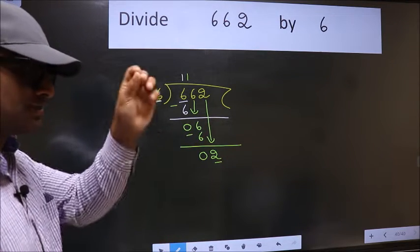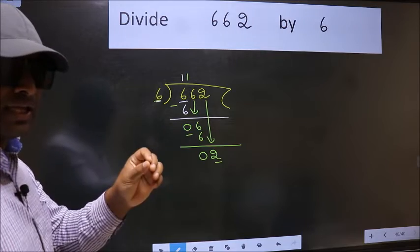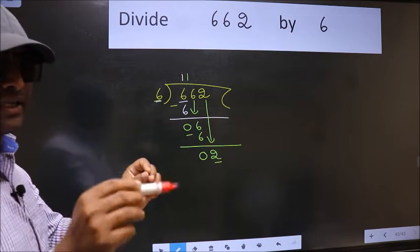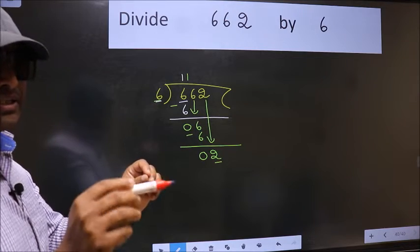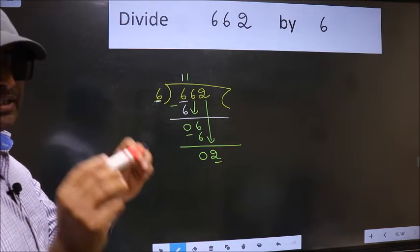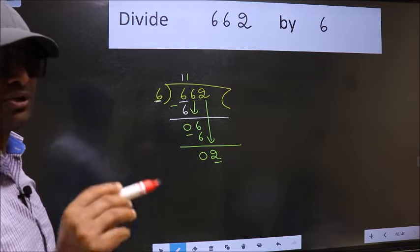I repeat: bring down the number and also put dot, take 0. Both at the same step you should not do.